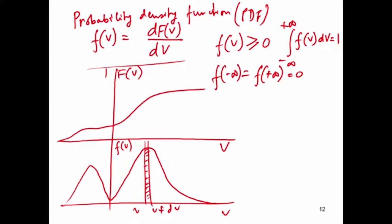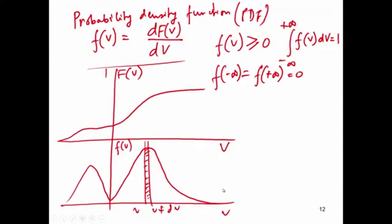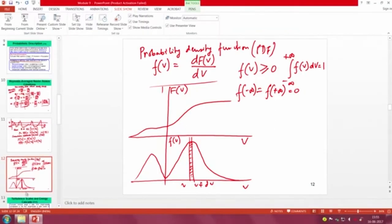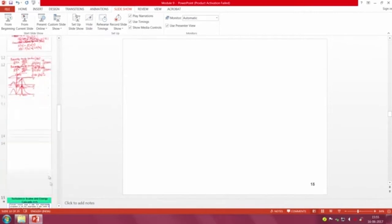Using these things we can define different statistical quantities — essentially the mean and different kinds of moments of the probability distribution function. The first and most important thing is defining the mean. Mean, or expectation, of a random variable U is defined as follows.